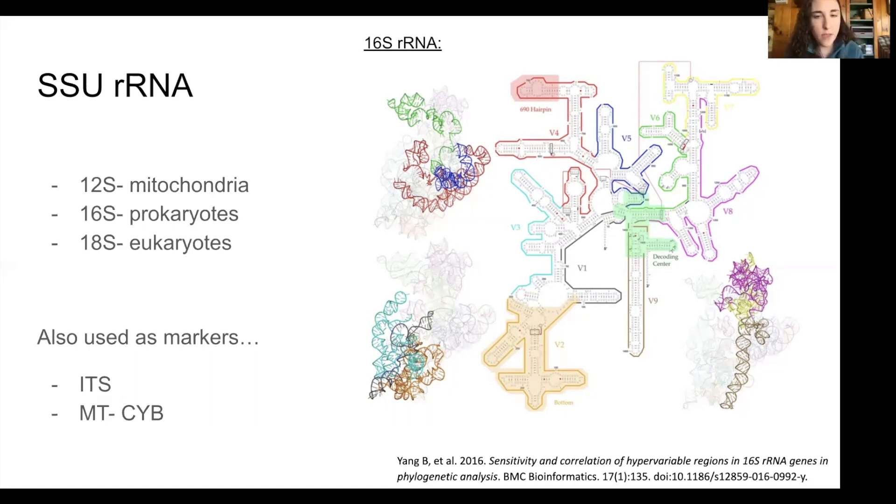There are studies that use other types of targets. So for example, for fungi, sometimes they use ITS, the internal transcribed spacer, or they'll use mitochondrial CYB for some metazoan studies. But I think most of us are microbial ecologists, so we mostly talk about 16S ribosomal RNA. So the RNA gene, which sometimes we call 16S rDNA, has different regions.